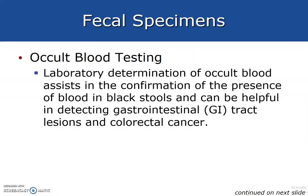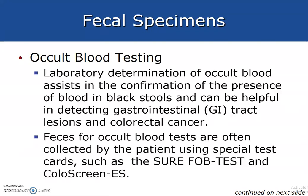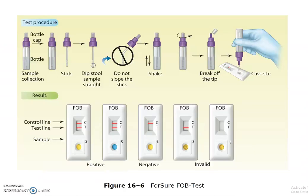Occult blood testing: laboratory determination of occult blood assists in confirmation of the presence of blood in black stools and can be helpful in detecting GI tract lesions and colorectal cancer. Feces for occult blood tests are often collected by the patient using special testing cards called SureFab tests.